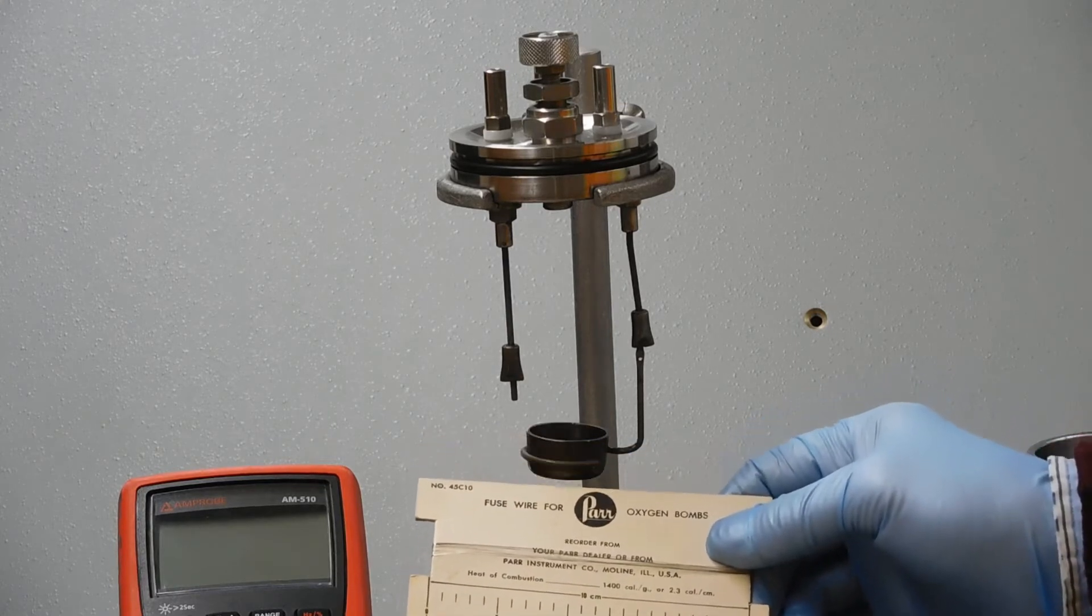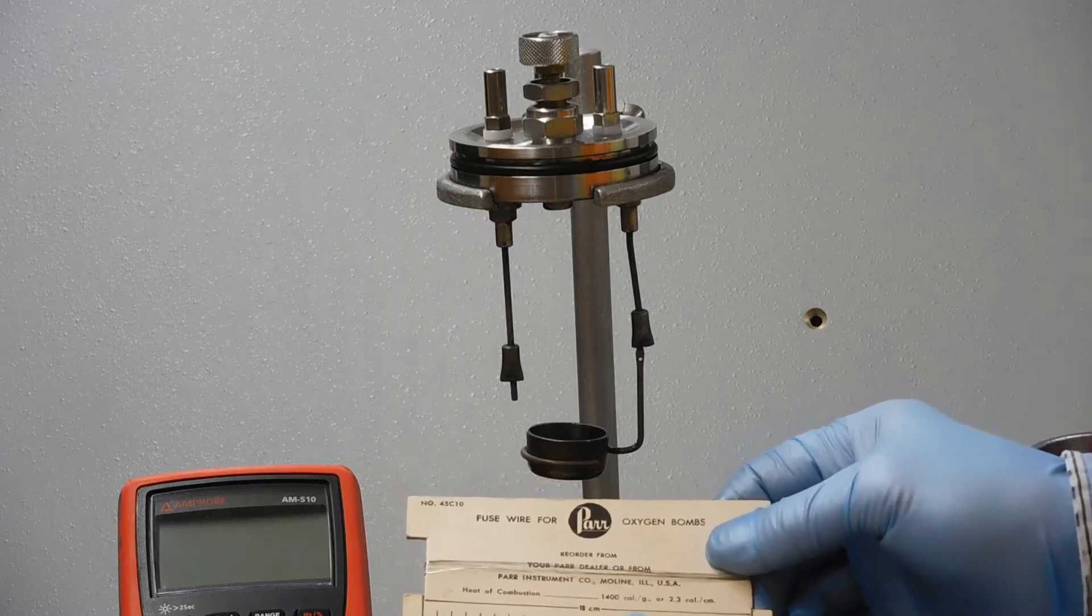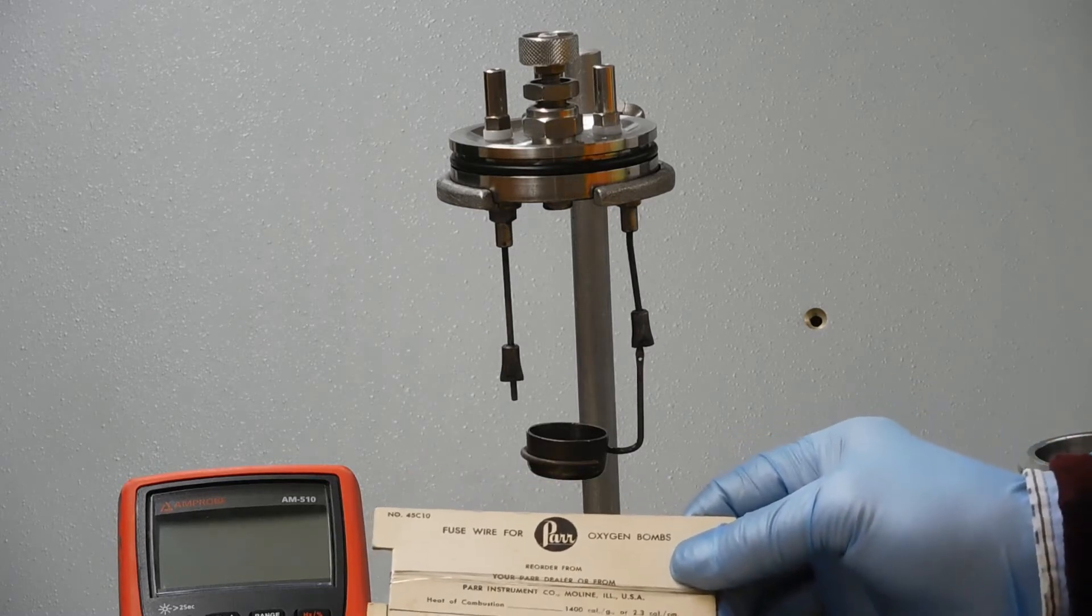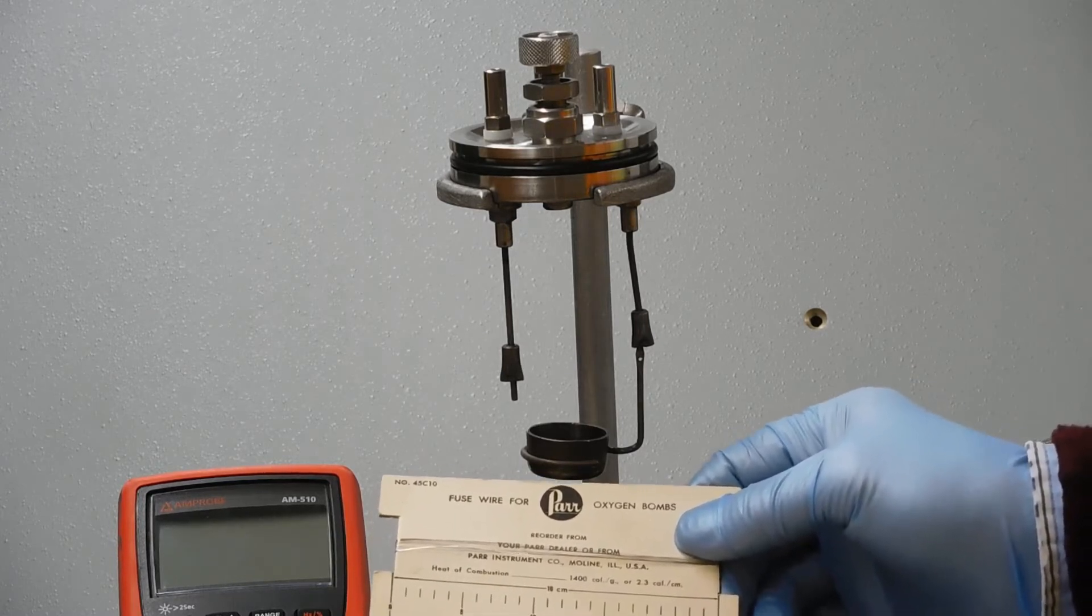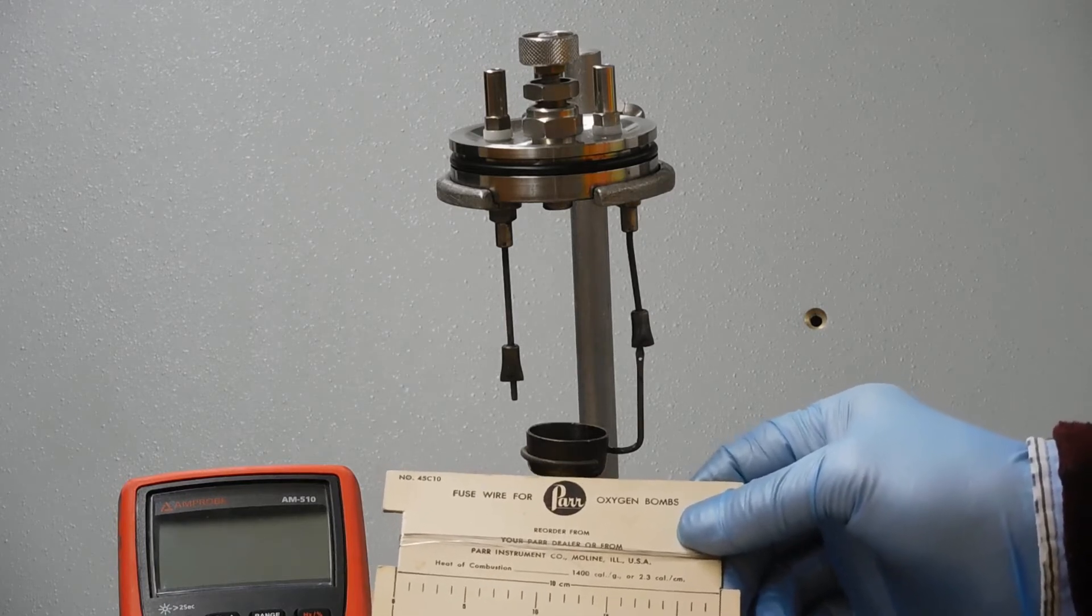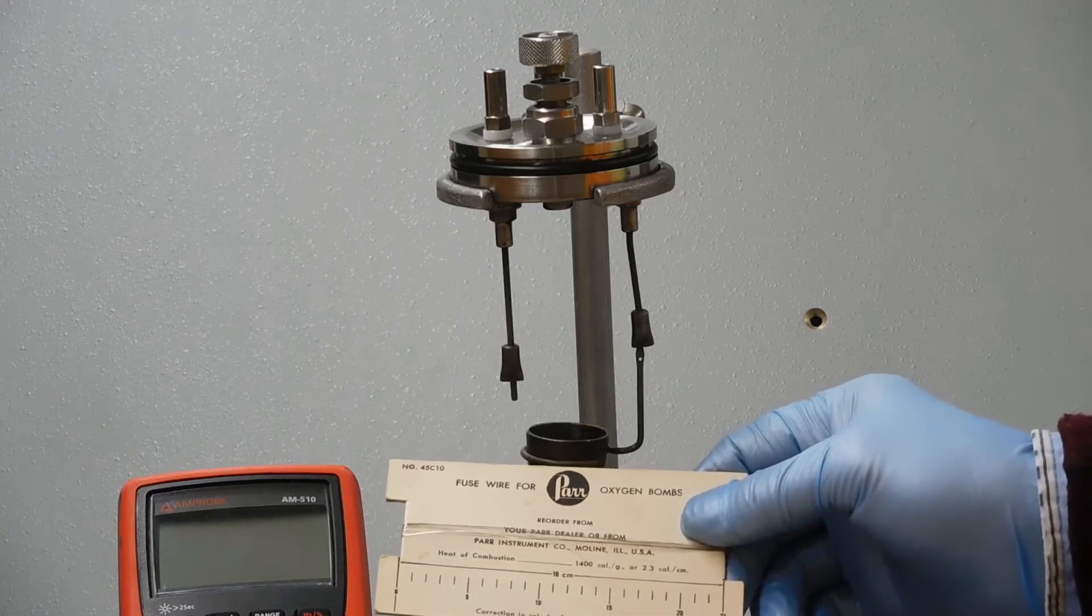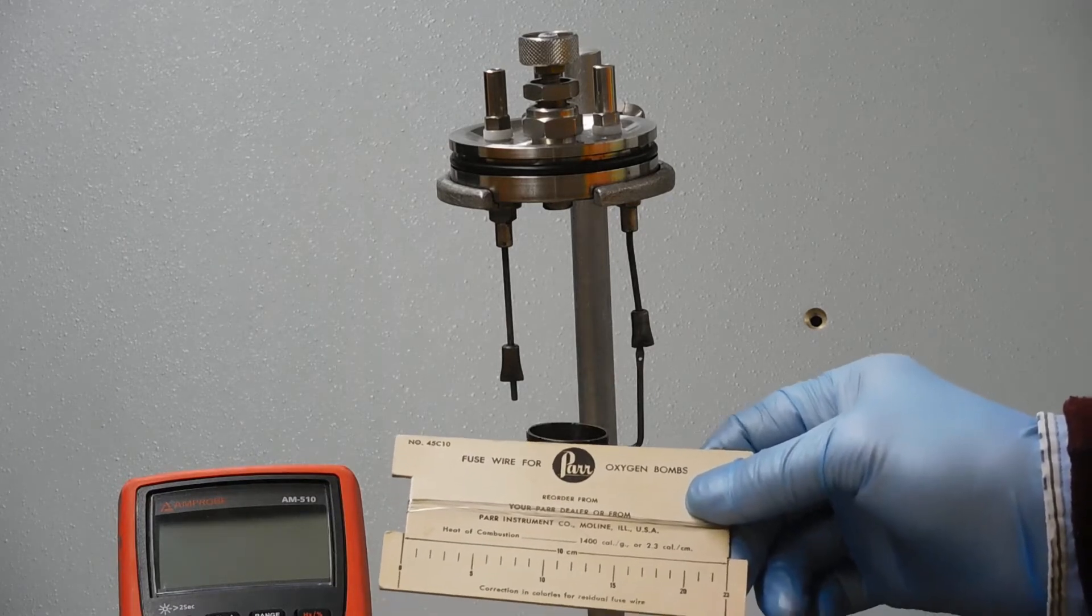This is how the fuse wire comes - it's on a card. On the card it says how much energy is generated by burning the fuse wire, because some of the wire will be burned in the process too. You'll collect what's left over and weigh it to figure out how much was actually burned.